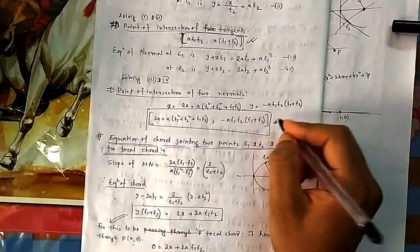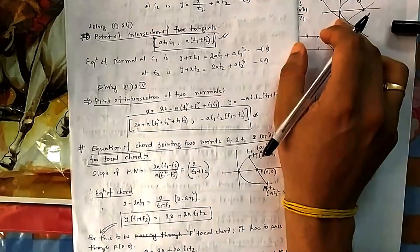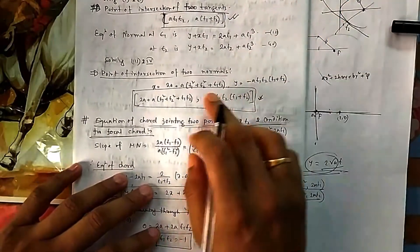So these are the important conclusions to find the intersecting point of the two tangents drawn at t1 and t2, or two normals drawn at the point t1 and t2.